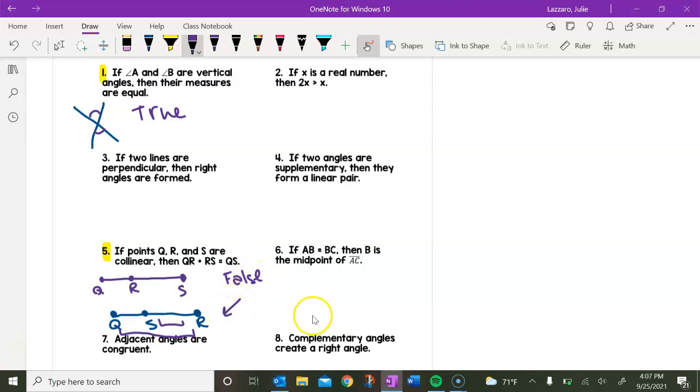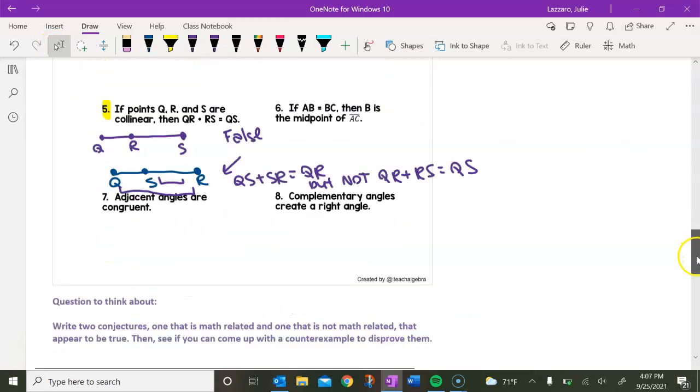And here is our counter example. In this case, QS plus SR equals QR, but not that QR plus RS equals QS, which is what the problem originally said. Okay, so we showed a counter example right here that proved this conjecture false.